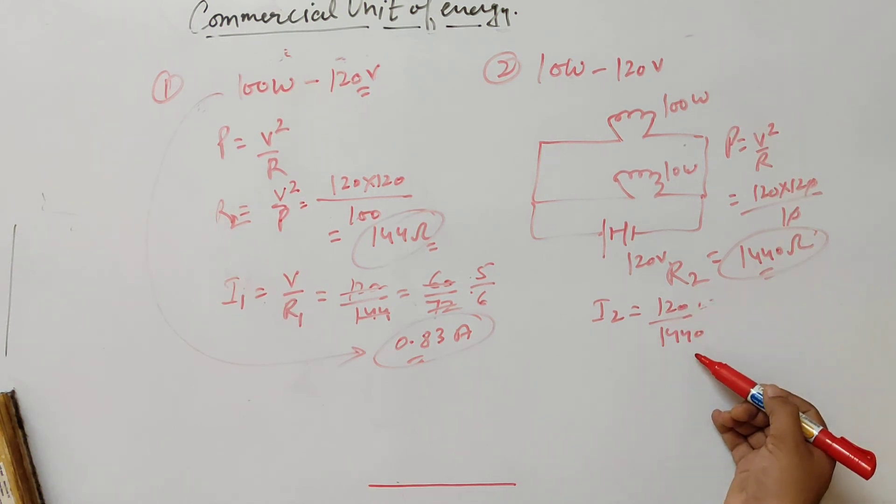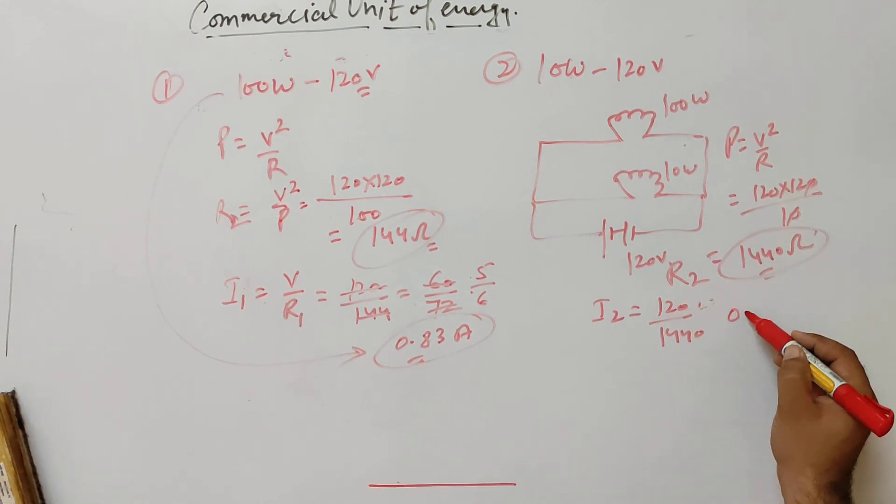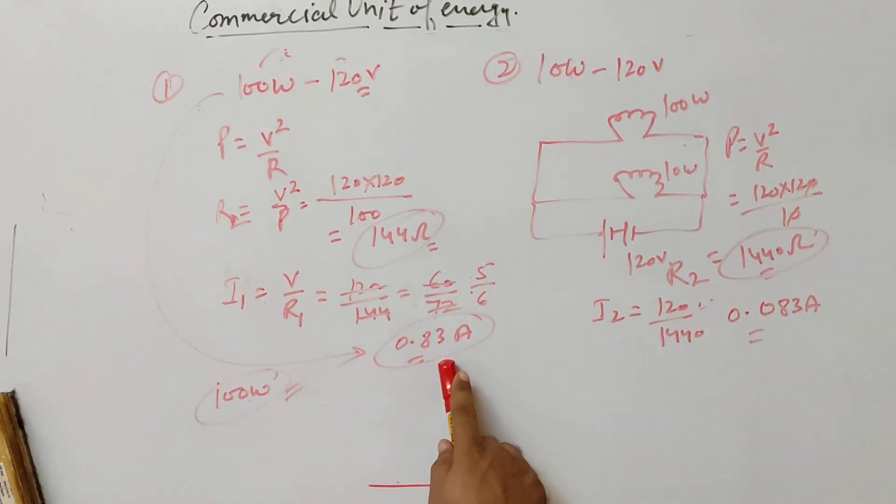The 100W bulb has greater current because resistance was smaller. The 100W bulb will consume more power. Current is greater in parallel, so it will consume more power.